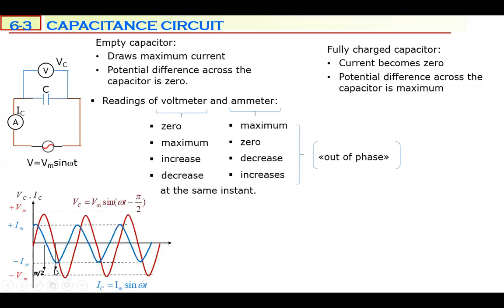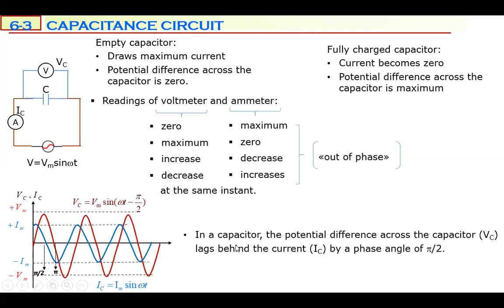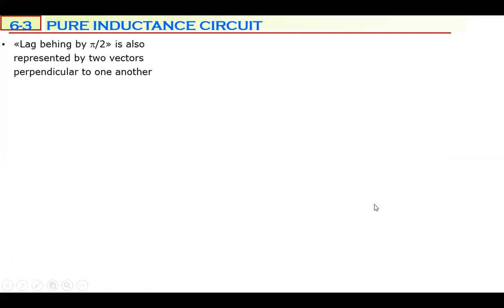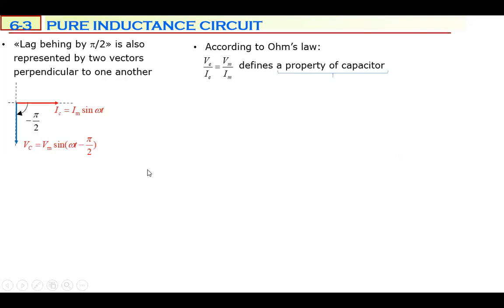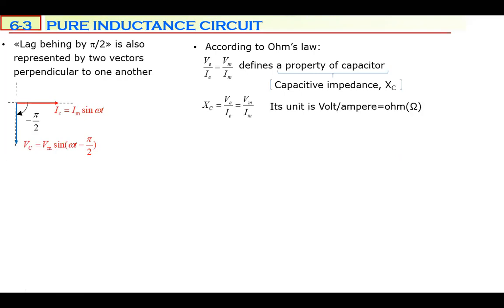The graph shows how electric current and potential difference change across the capacitor. The potential difference across the capacitor VC lags behind the electric current by a phase angle of π/2. This lagging is represented by a phasor in the opposite direction to the inductor — it was positive π/2 for the inductor, but now it's negative π/2 for the capacitor. If you divide VE by IE, you get the capacitive impedance XC.